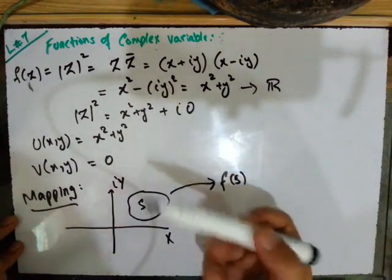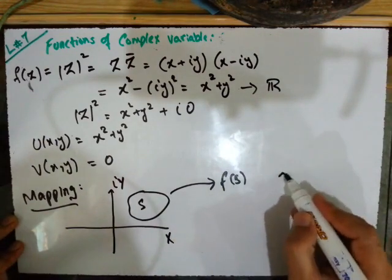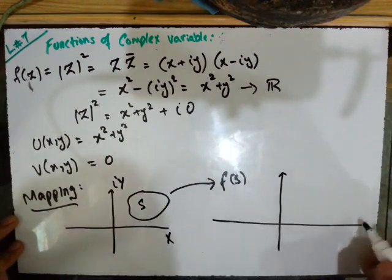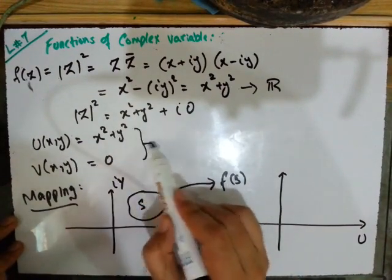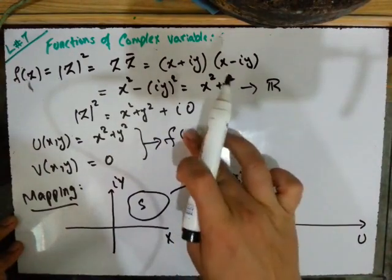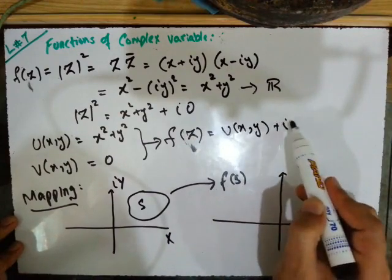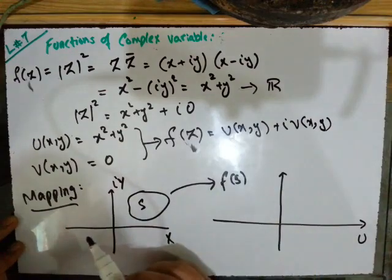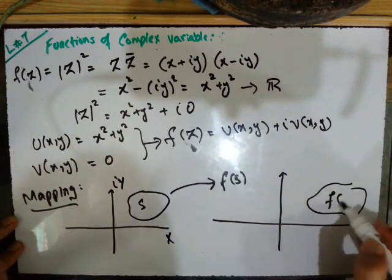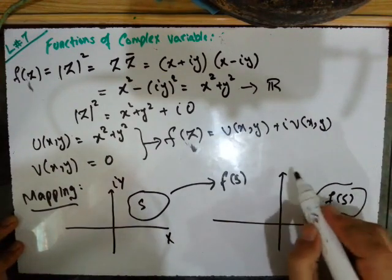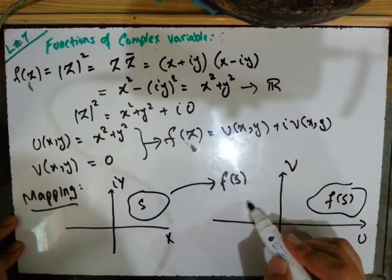When a function is applied — for example, squaring, taking modulus, or adding two functions — what happens is that after the function is applied, those values get mapped to the second plane, the u-v plane. Here f(z) = u(x,y) + i·v(x,y), where u and v are both functions of x and y.